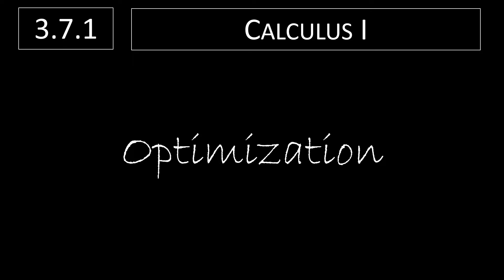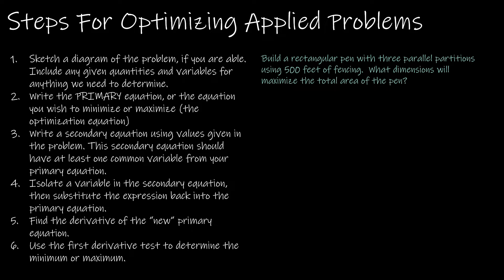In this video we're going to take a look at optimization — optimizing applied problems by finding the minimum or maximum. Let's do this question together. I've got the steps written on the left and the question on the right. Build a rectangular pen with three parallel partitions using 500 feet of fencing. What dimensions will maximize the total area of the pen?